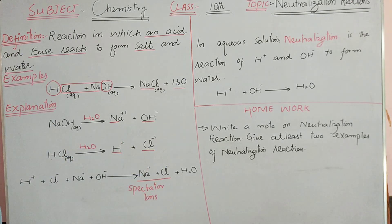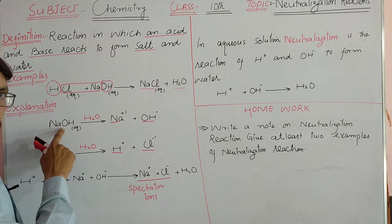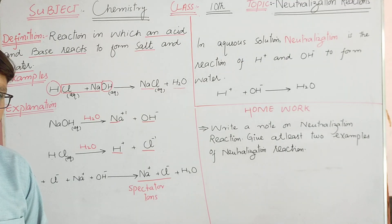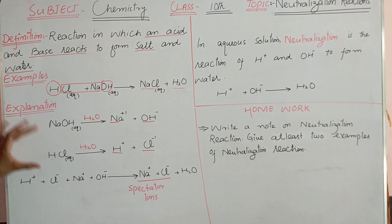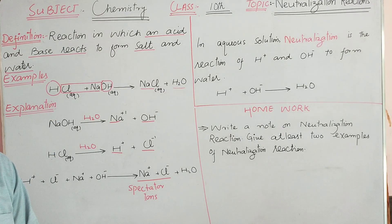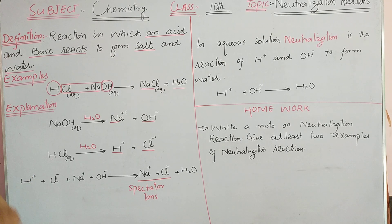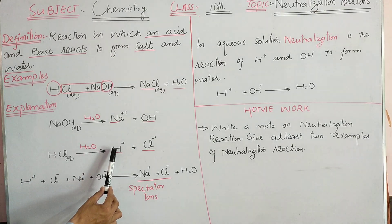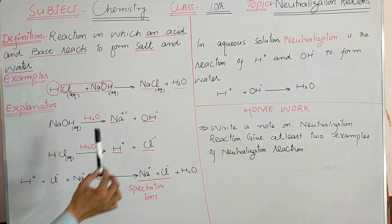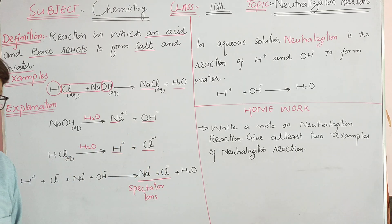We have an oxide and HCl. Now we will mix these two solutions. When you mix these solutions, you will have hydrogen ion and chloride ion from the acid, and sodium ion and hydroxyl ion from the base.